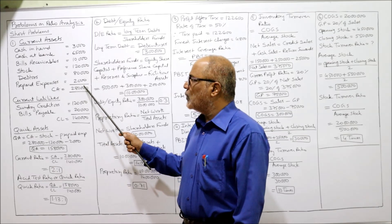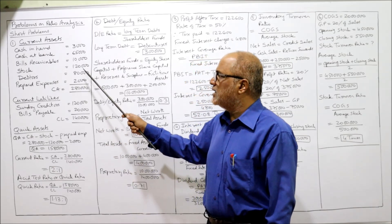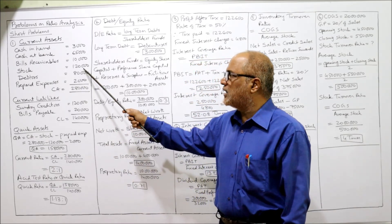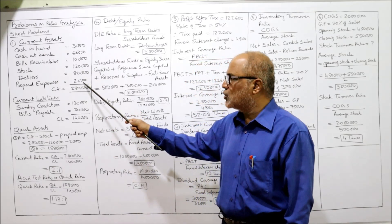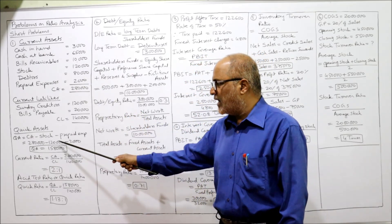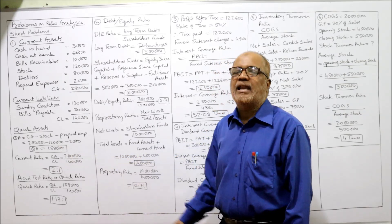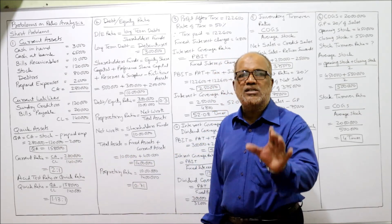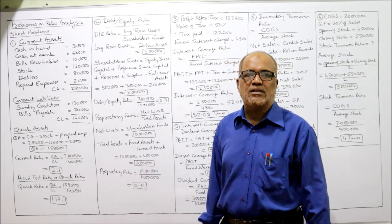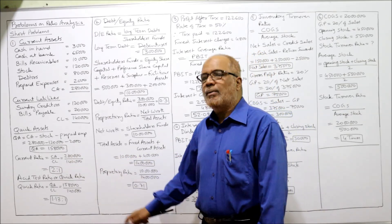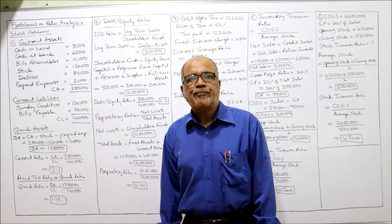Current assets are those which can be converted into cash within one year. Quick assets are current assets that can quickly be converted into cash without loss of time and without risk. To get quick assets, deduct stock and prepaid expenses from current assets: 2,80,000 minus 1,20,000 minus 2,000 equals 1,58,000 quick assets.